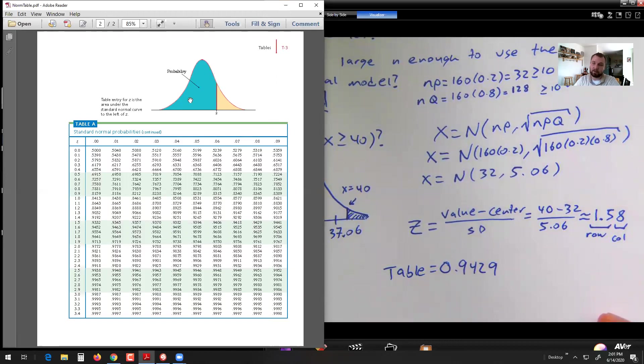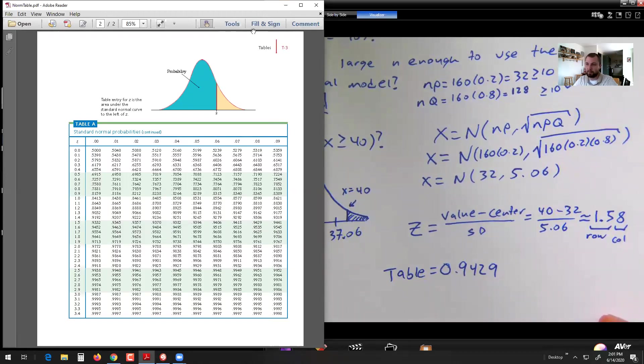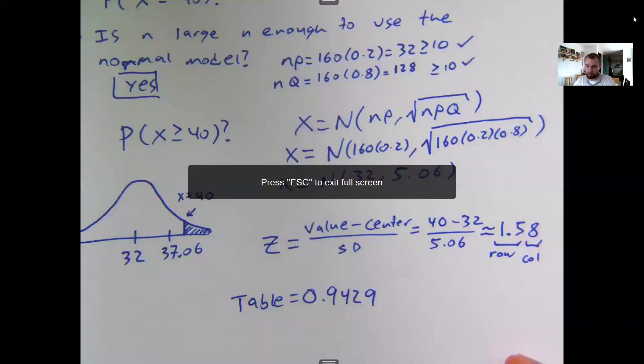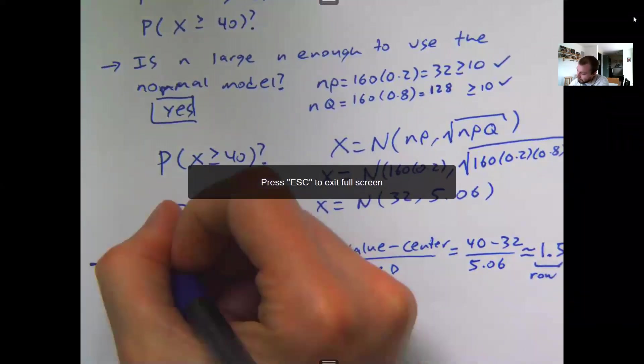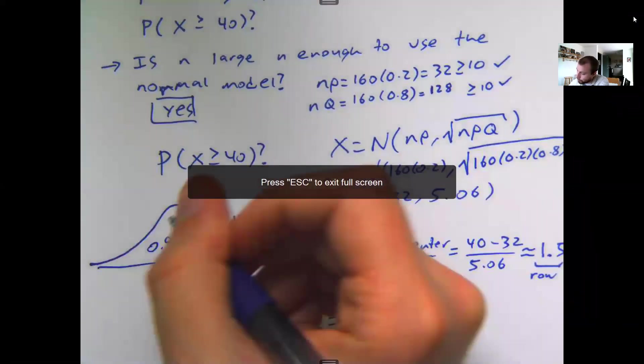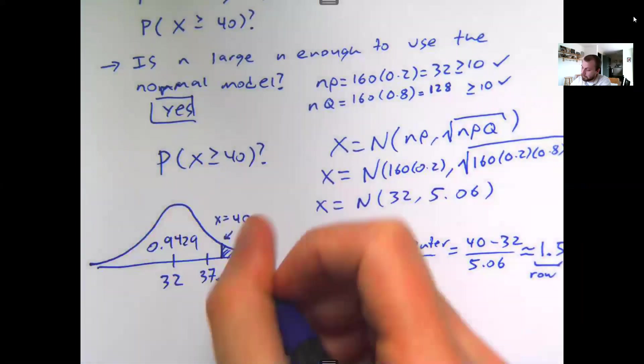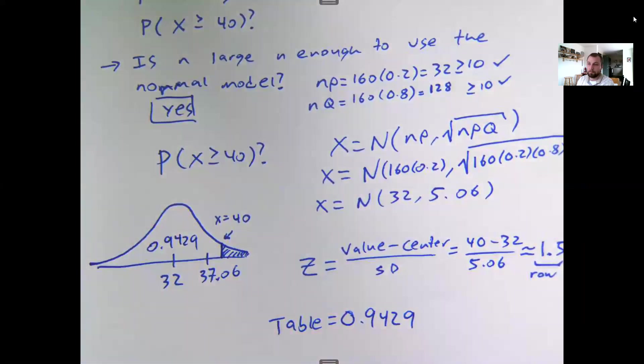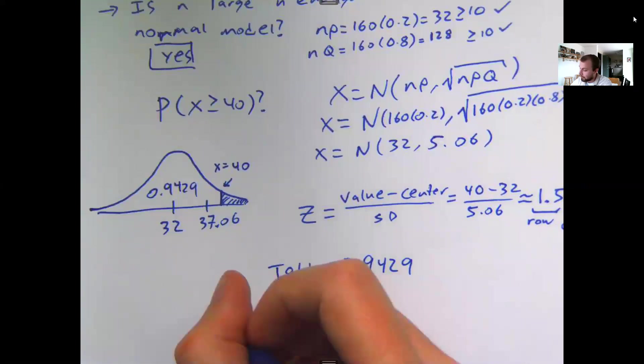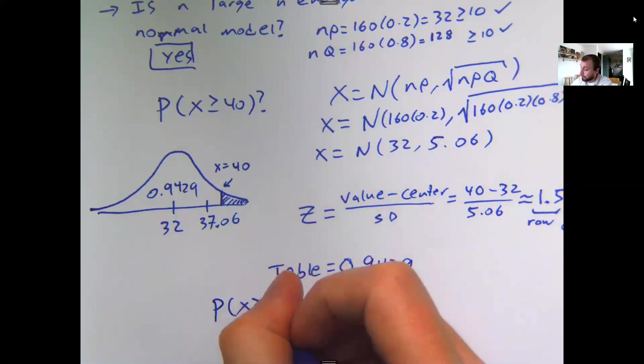1.5 met the 8 at 94.29%. Whatever this number is inside of the table, this is always the area to the left of your indicated value. So in the case of our curve, this means I have 94.29 in the white region that I don't want. So to get the area to the right of 40, I'm going to take 1 minus the table value.